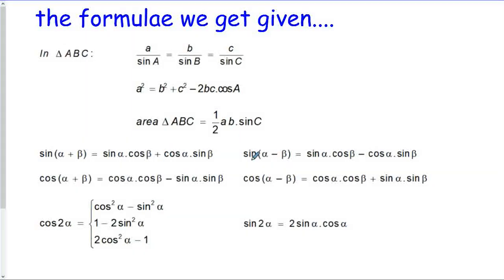As we've done with the other videos, let's look at the formulae that we get given. These ones here are all around solving triangles - non-right angle triangles, or in fact even right angle triangles. These are identities.